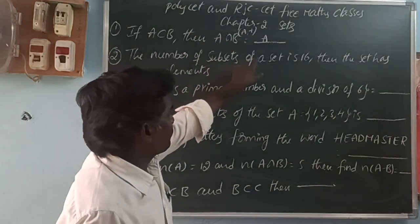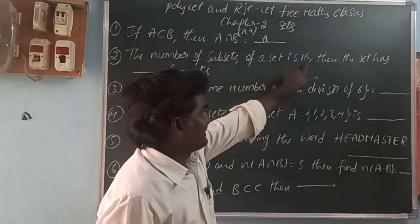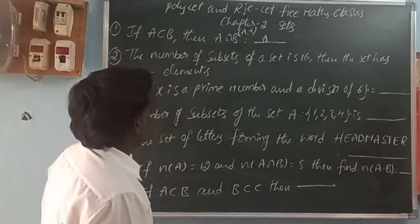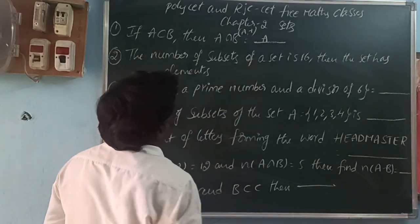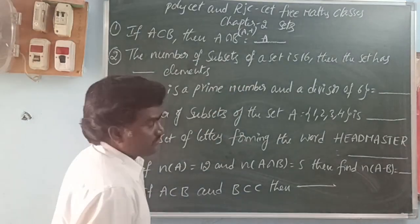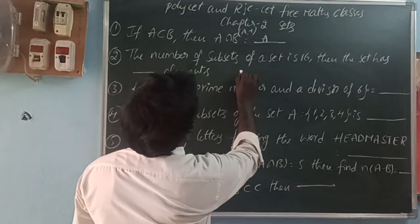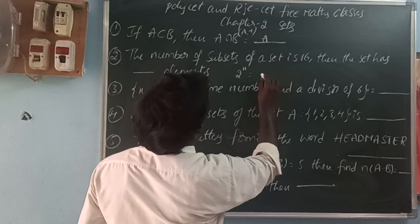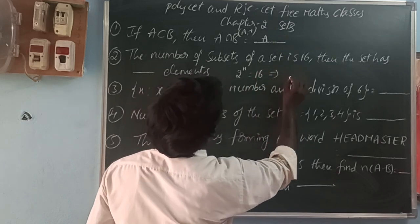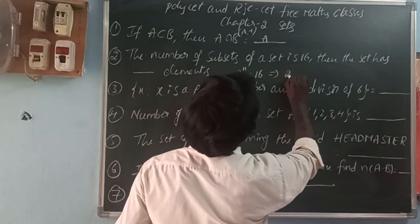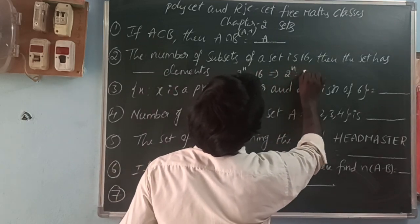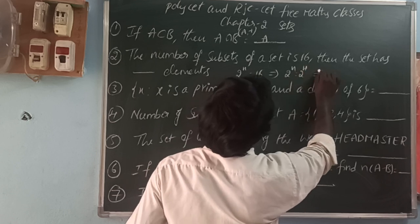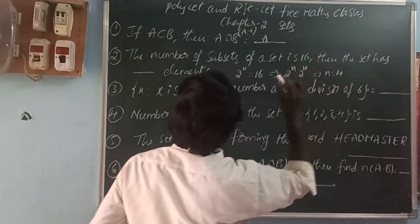Next: the number of subsets of a set is 16, then the set has how many elements? So, the number of subsets formula is 2 power N equal to 16. So, 16 we can write as 2 power 4. Since the bases are the same, the powers are also the same. So N is equal to 4.